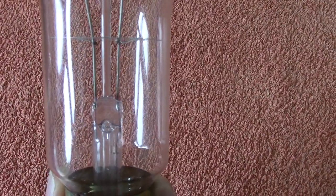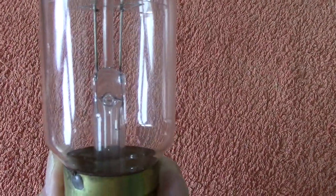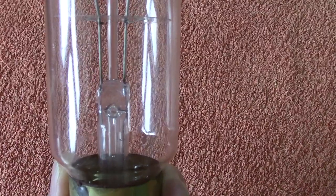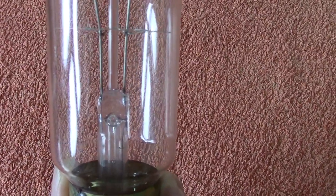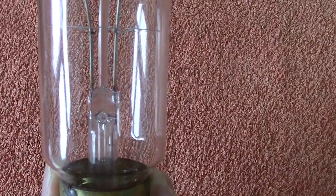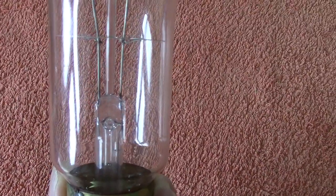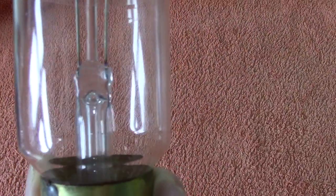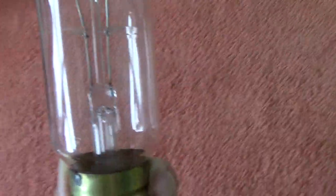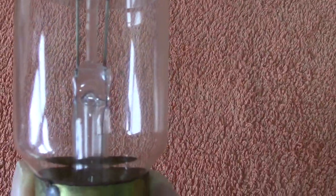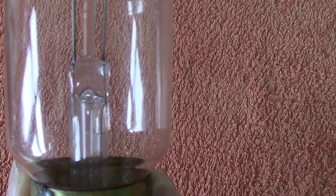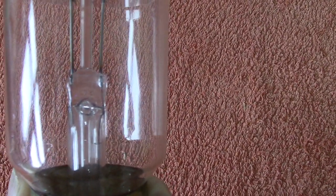Originally on the very, very old lamps, the lead in wires were made of platinum, which of course, platinum is a very expensive metal, because that did expand the same as this DUMMET metal. If you look carefully, you might even see it looks a coppery colour. The coppery colour is the actual alloy that they use.